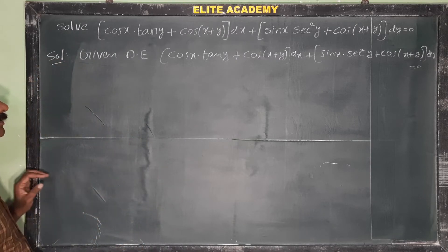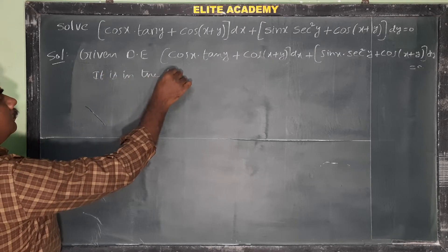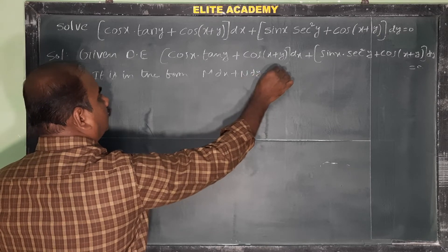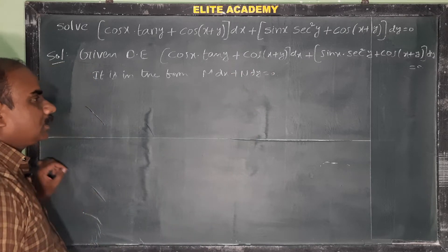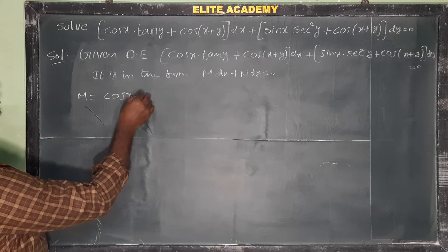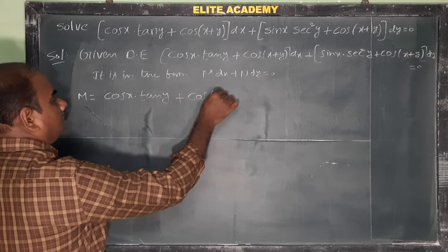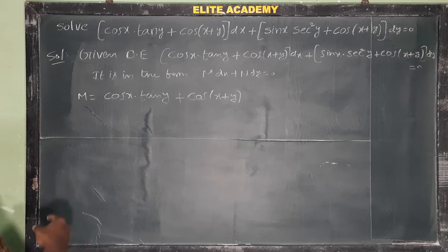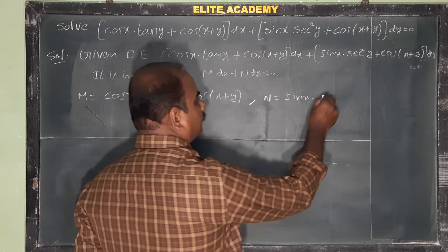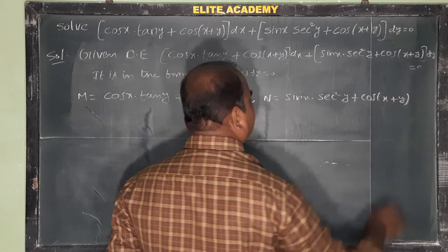This is the given differential equation. It is in the form M dx + N dy = 0. So M is the coefficient of dx: cos(x)·(tan(y) + cos(x+y)). And N is equal to sin(x)·sec²(y) + cos(x+y).